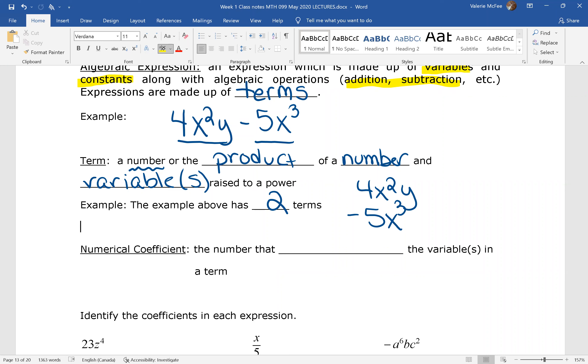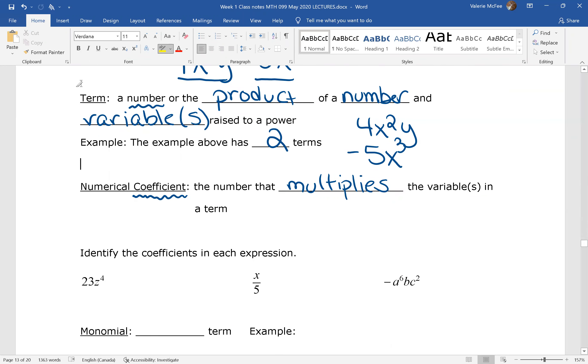Sometimes we're going to refer to the numerical coefficient. We often just use the word coefficient and imply that we're talking about a number. This is the number that multiplies the variables in a term. So here are some examples. What are the coefficients in each expression? Well, in the first one, I can see that 23 is multiplying the variables. Pause your video and write down the numerical coefficient for each of the next two examples.